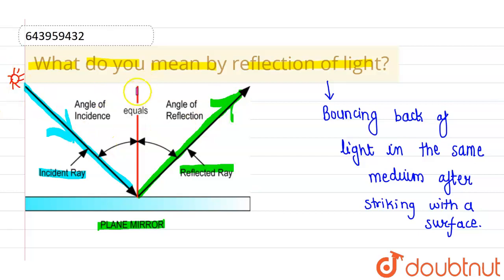And we also know that this is the normal. This red line is the normal to this particular plane mirror. So, the angle made by incident ray with the normal, this particular angle which is known as angle of incidence, is same as the angle of reflection which the reflected ray makes with the normal.